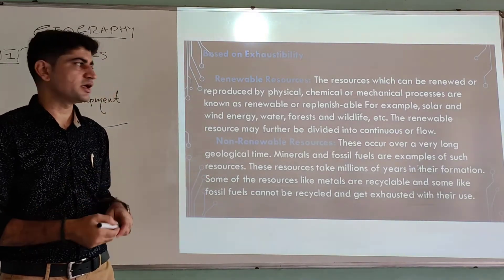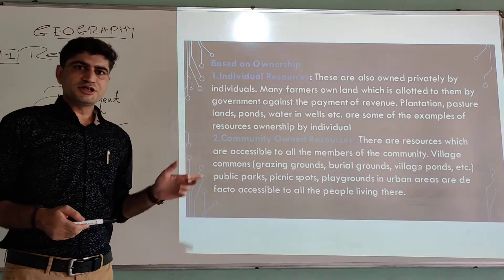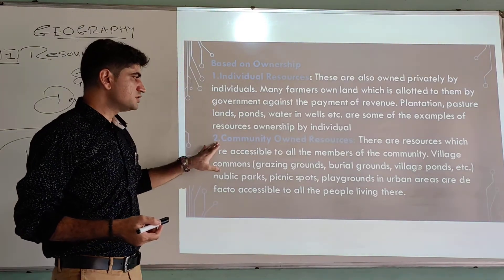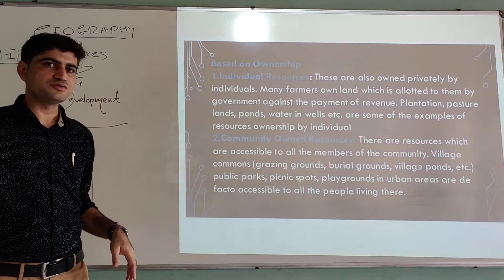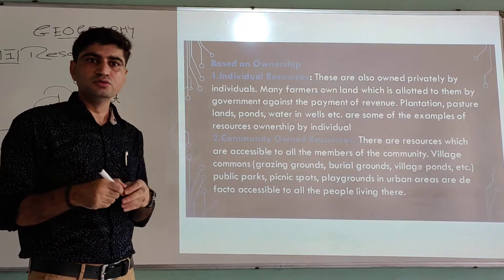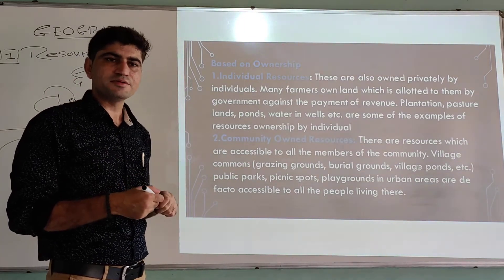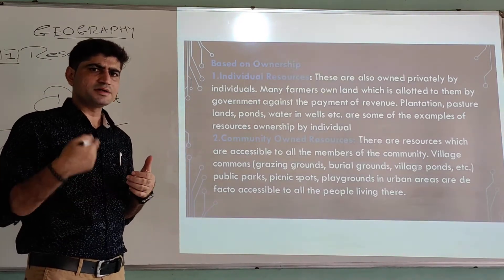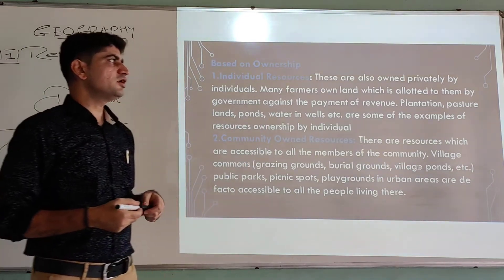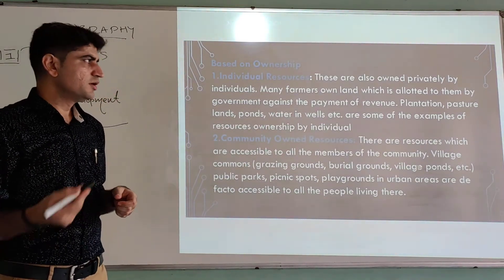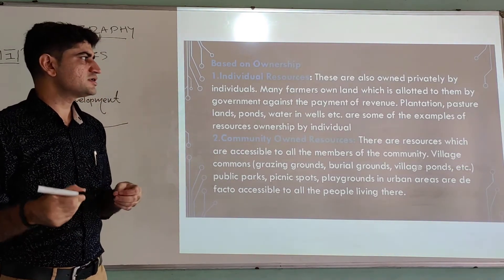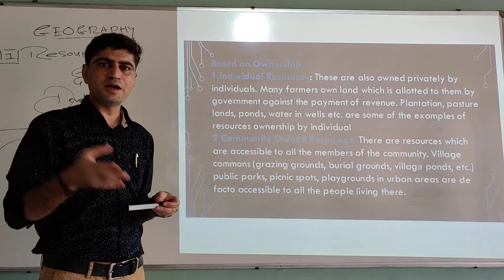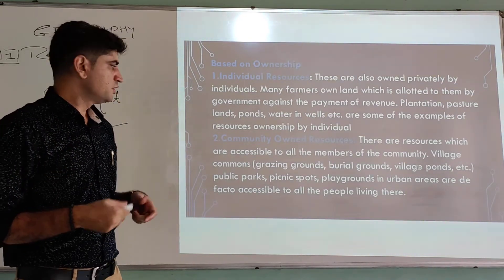Next, classification based on ownership. On the basis of ownership we have four categories: individual, community, national, and international. Individual resources are owned privately — by a person, a family, or a group of people. Examples include plantation land, pasture land, ponds, and watering plants owned by individuals, such as a house owned by your family. That is a private individual resource.